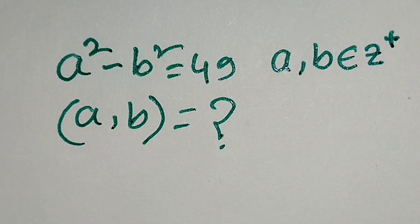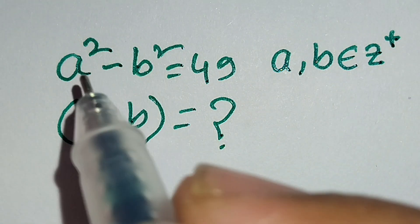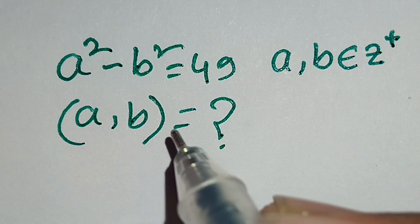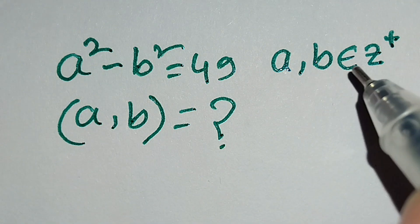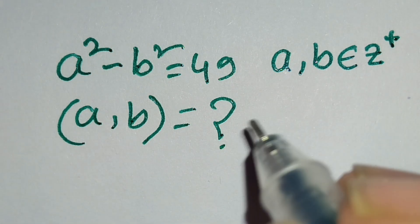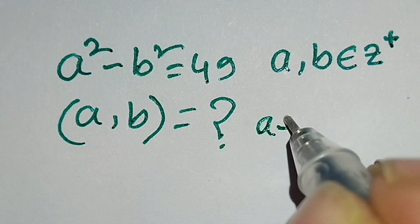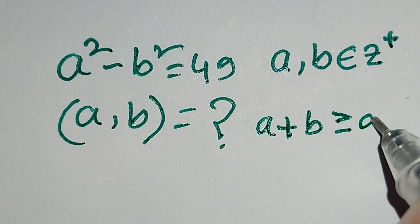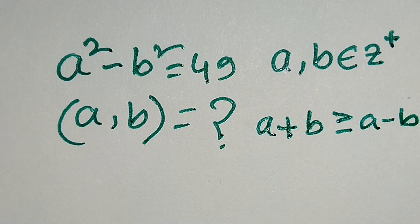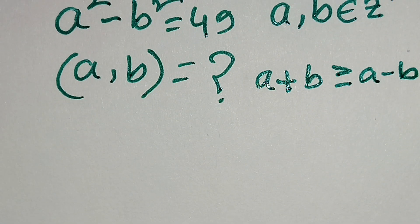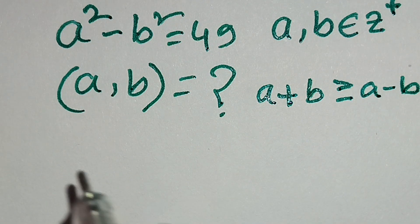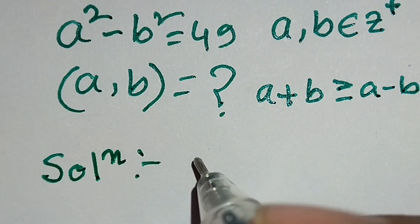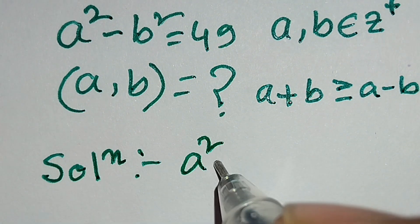Hello, this is a nice math problem. a squared minus b squared is equal to 49, and we have to find the value of ab, where ab belongs to positive integers. So a plus b is always greater than or equal to a minus b. Now we will solve this problem, so let's start the solution.